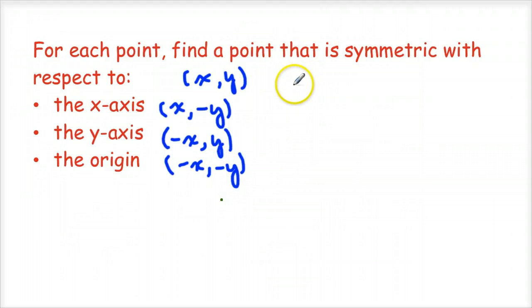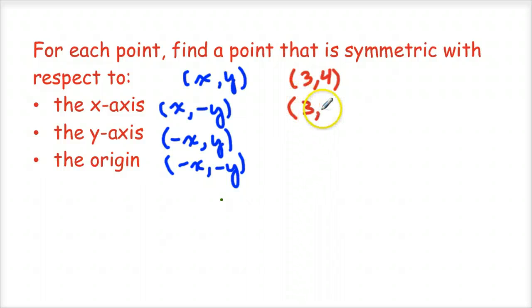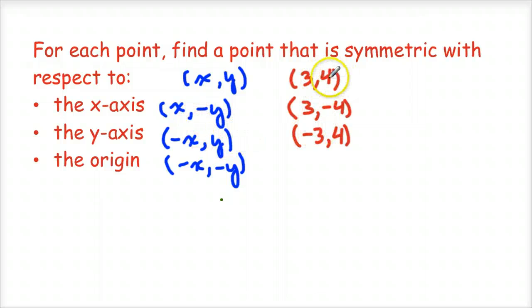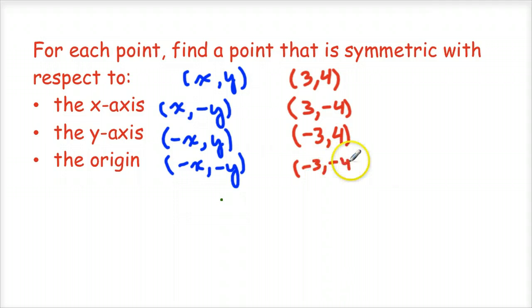Let's do an example with the point (3, 4). If a graph is symmetric to the x-axis and (3, 4) is on it, then (3, -4) is also on it — we've just flipped the y-coordinate. If it's symmetric to the y-axis, we take the opposite of the x-coordinate, so (-3, 4) would also be on the graph. And if it's symmetric to the origin, then (-3, -4) would be on the graph.